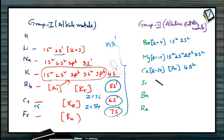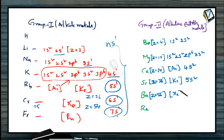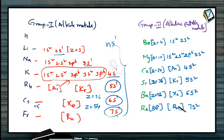For strontium (atomic number 38), the configuration is written as [Kr] 5s2. For barium (atomic number 56), using xenon's configuration (atomic number 54), the next two electrons enter 6s2. For radium (atomic number 88), radon has atomic number 86, and the next two electrons enter 7s2. Noble gas shorthand using neon, argon, krypton, xenon, or radon simplifies writing these configurations.